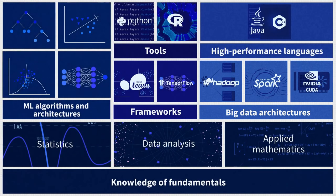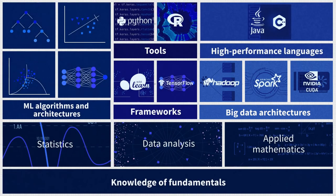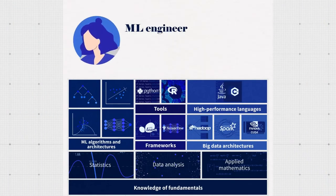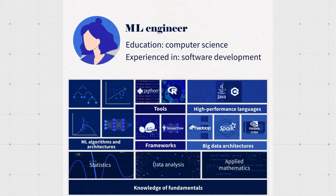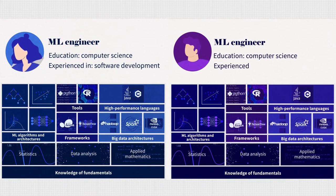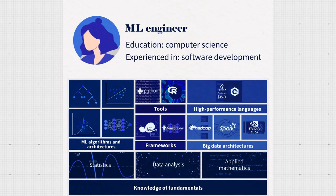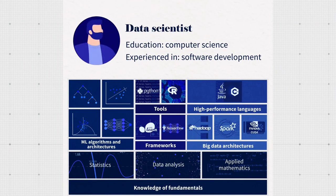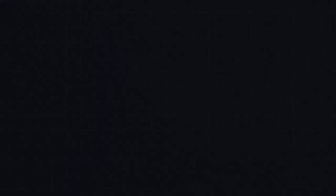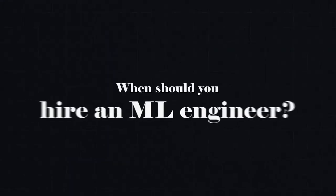So where do machine learning engineers come from? Obviously, you'd expect them to have a computer science education. Some engineers transition from software development, while others start with data science and analytics and then acquire engineering skills. But this skill set sounds like a data scientist, right? So what's the difference, and when should you hire an ML engineer?